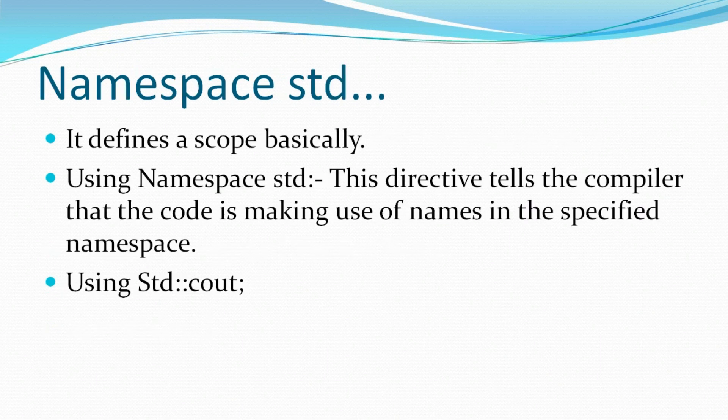Next up is namespace standard. It defines a scope basically. Suppose there are two students with the same name in the same class, so we need to find a way to differentiate them. Sometimes it's like my name is Arjun, there is another guy whose name is Arjun, and we need to differentiate between these two. Like I'm 24 years old, maybe he's 23 years old.